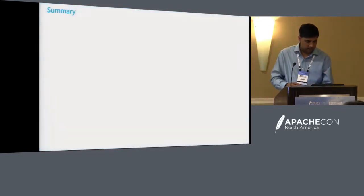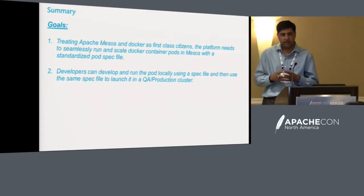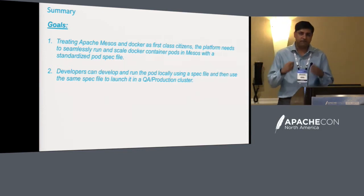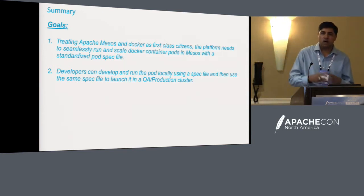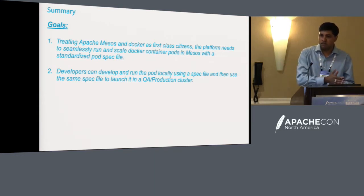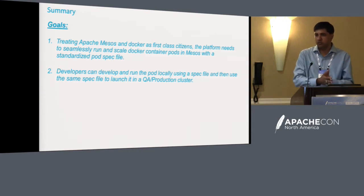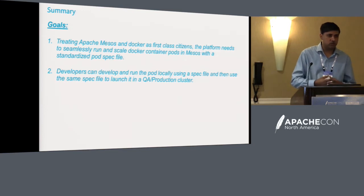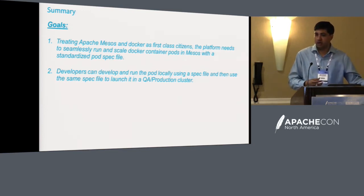The goal of this talk is that with Apache Mesos and Docker both being treated as first-class citizens, how to run container pods. By first-class citizens, I mean developers and operations using the Docker runtime, the Docker toolset, volumes, network plugins with libnetwork — not just the Docker image with a different runtime like Rocket. So you're treating Docker as first-class in your ecosystem, and you already have Apache Mesos running as well.